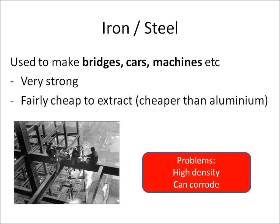The last metal you need to know about is iron and its alloy steel. They're used to make things like bridges, girders, cars, and machines — they're very strong, which is good. They're also relatively cheap to extract because all we have to do is heat iron oxide with carbon; we don't need to use electrolysis. However, problems with iron and steel are that they have a high density, so they can't be used for plane bodies, and also iron and steel can corrode.